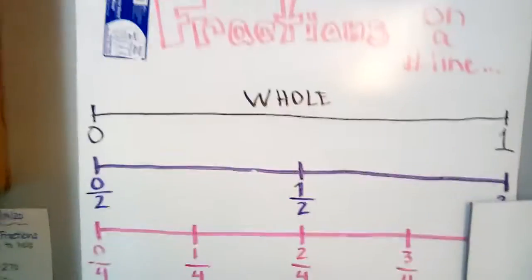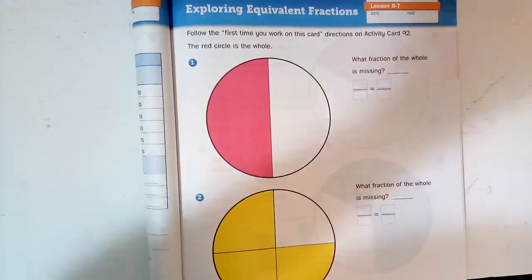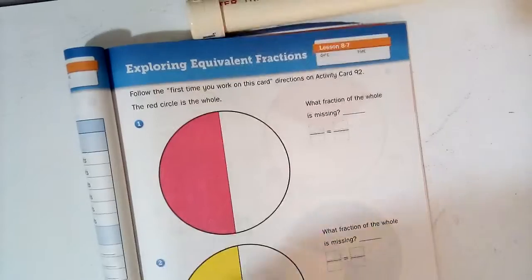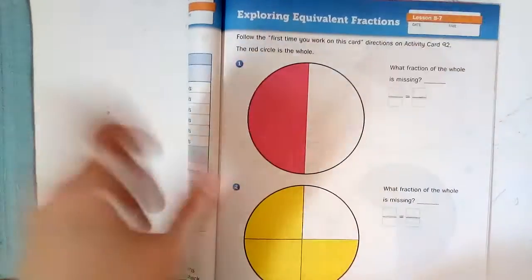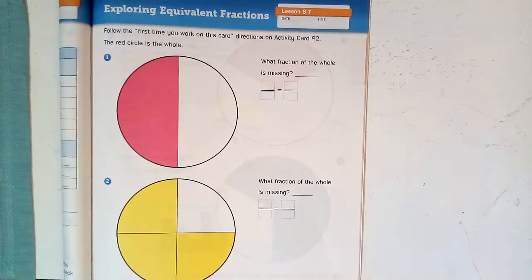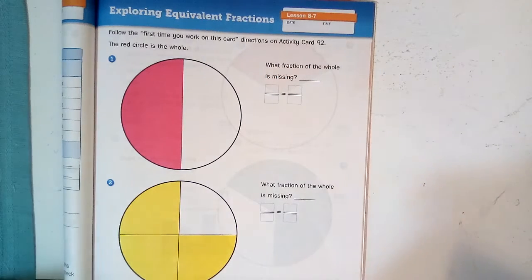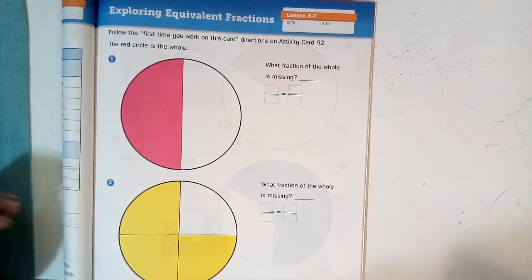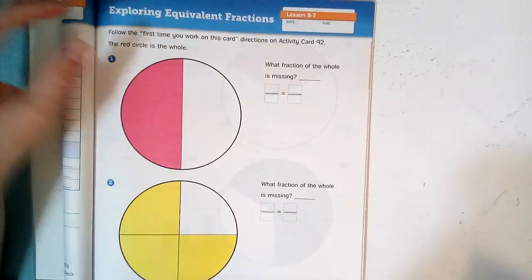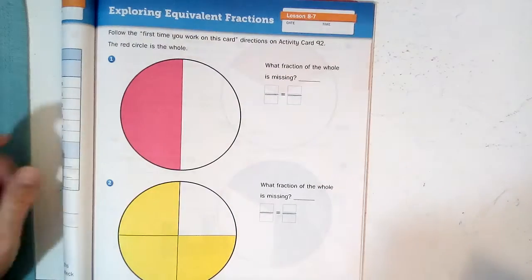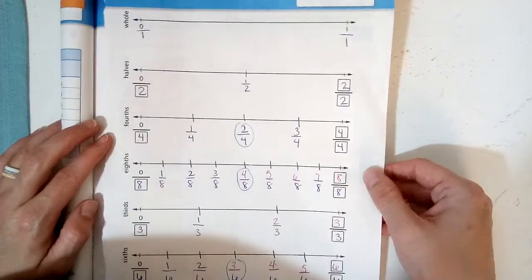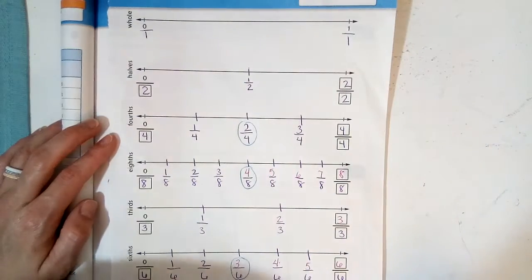There's our equivalent fractions chart. Okay, so here we go. Technical difficulties, there, okay. So we're not going to bother with following the first time on this activity card because that's at school and we won't need it. But we are going to be working through fractions, what is left, and what is equal to what is left.